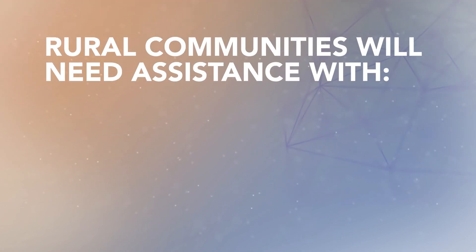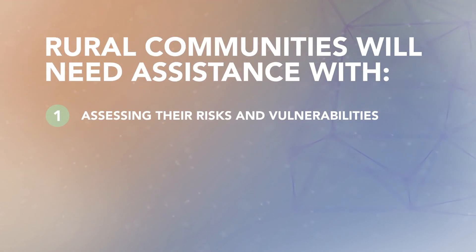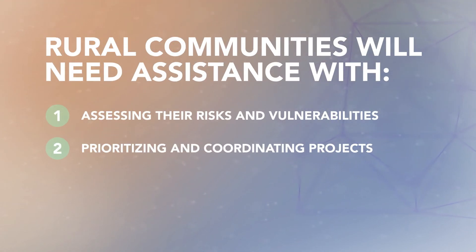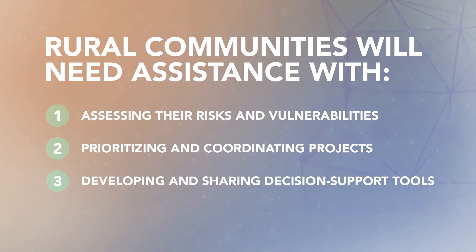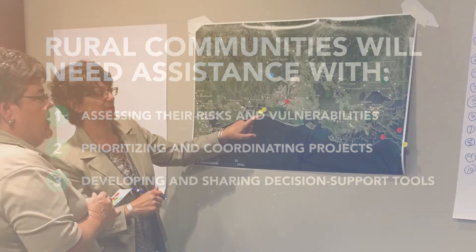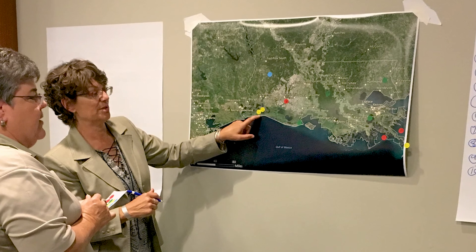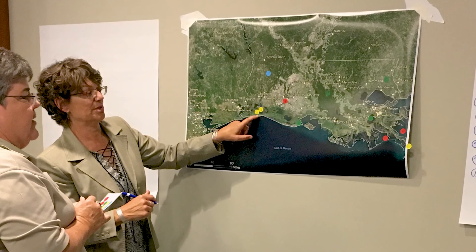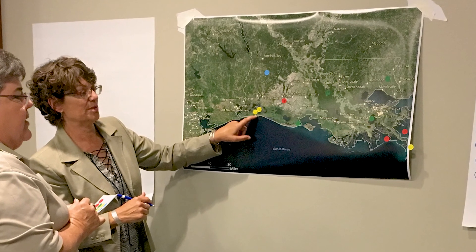Because of these factors, many rural communities are more vulnerable to climate change than urban areas. Rural communities can lead adaptation efforts so that their citizens and economic drivers are more resilient to climate change, but they need the resources to do so. Rural communities will need assistance in assessing their risk and vulnerabilities, prioritizing and coordinating projects, and developing and sharing decision support tools. In order for adaptation measures to be effective, they will need to be location-specific, driven by the needs of the local stakeholders.